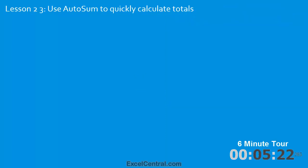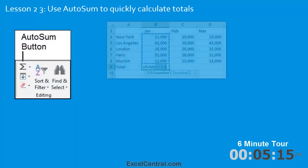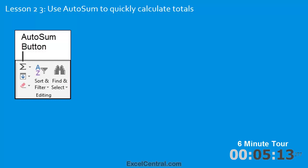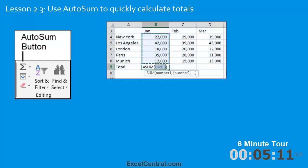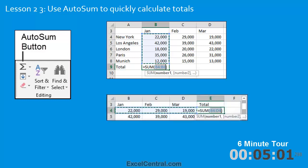In the third lesson you'll use AutoSum to quickly calculate totals. AutoSum is one of Excel's most powerful features. In this lesson you'll also create your first formula, automatically generated by AutoSum — in this case to calculate the total sales for all branches in January, and to calculate the sales for the New York branch for the first quarter.